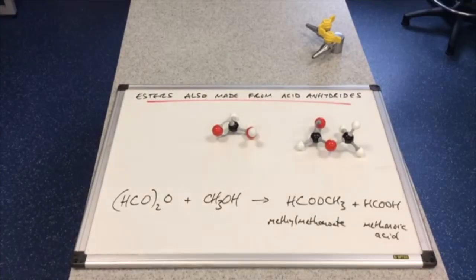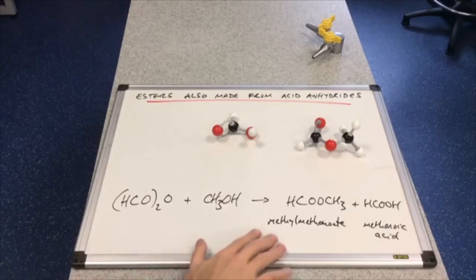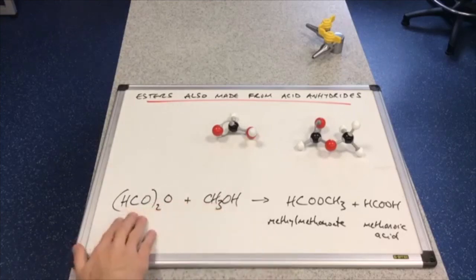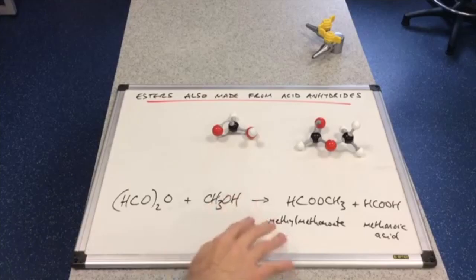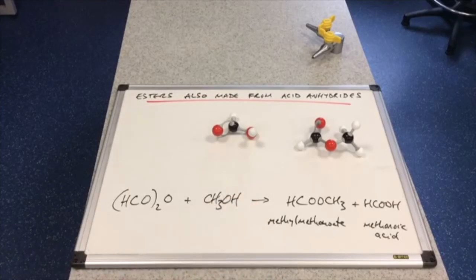So there's the completed equation. And the other point I'd like to make is this type of reaction, so acid anhydride and alcohol, this one doesn't need the concentrated sulfuric acid catalyst. It would still need a little bit of heat, but you don't need the catalyst.